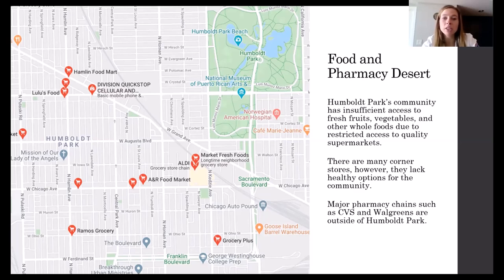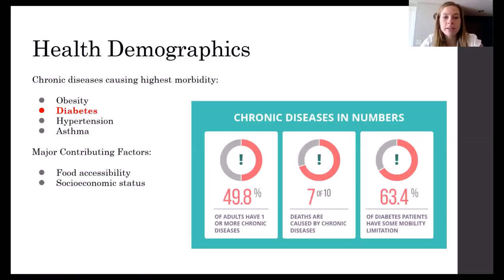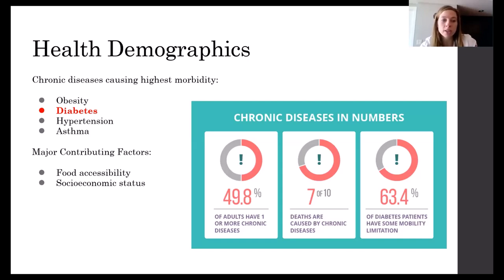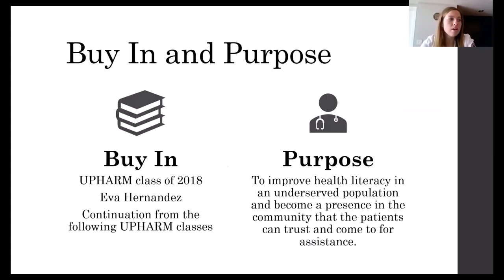We chose to work in Humboldt Park due to their low socioeconomic status, lower-than-average education levels, and because it is a food and pharmacy desert. Humboldt Park has insufficient access to fresh fruits, vegetables, and whole foods — there is only one grocery store chain in the entire neighborhood, an Aldi on the far east side. Many people have trouble getting there due to disabilities or transportation issues, so they rely on corner stores which lack healthy options. Major pharmacy chains like CVS and Walgreens are located just outside the neighborhood. About 49.8% of adults in the U.S. have one or more chronic disease, and according to the Chicago Health Atlas, the chronic diseases causing the highest morbidity in Humboldt Park are obesity, diabetes, hypertension, and asthma — with food accessibility and socioeconomic status as major contributing factors.